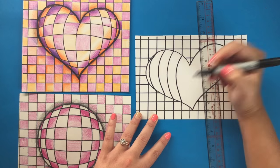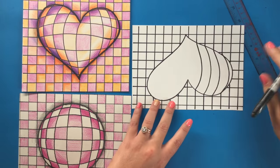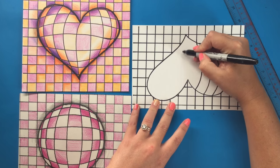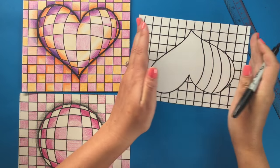But then once I finish this one, I actually want to turn my paper around because my lines are going to start going the opposite direction. I want my shape to look like it's bulging.